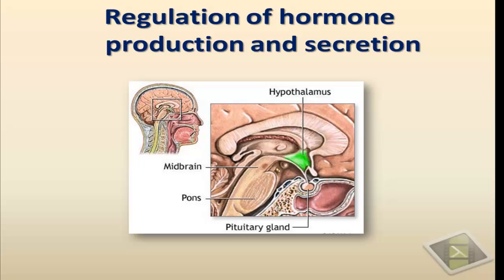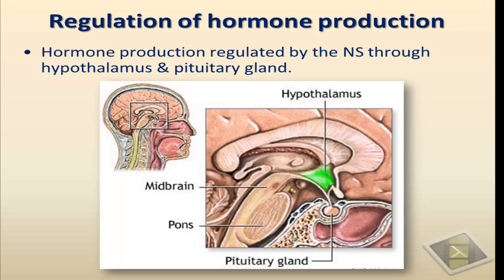Hello. This short podcast is about the regulation of hormone production and secretion. This production and secretion is actually regulated by the nervous system through two parts of the nervous system. The first one is a part of the brain known as the hypothalamus, situated at the floor of the brain. Attached to that hypothalamus is the small pituitary gland that sits in a groove in the bones of the skull, connected to the hypothalamus by a stalk known as the infundibulum. These two communicate together and through their communication they control the activity of the entire endocrine system.